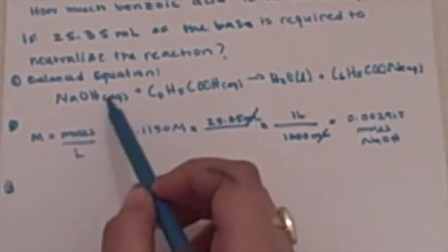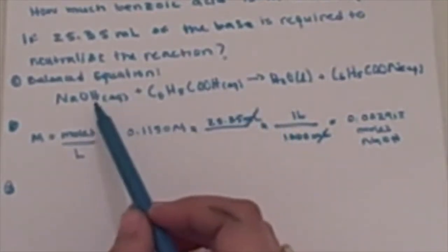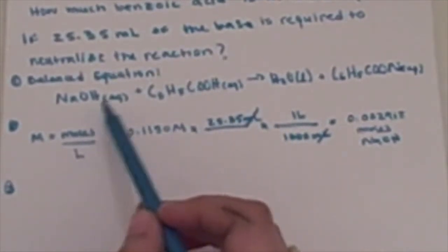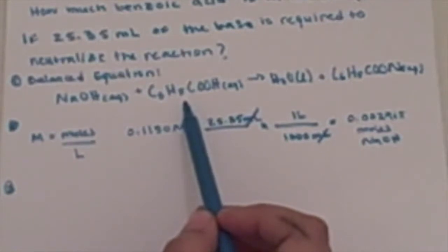The third step is to determine the moles of the benzoic acid. Here we're going to use our balanced equation to look at the mole to mole ratio. For every one mole of NaOH, we get one mole of benzoic acid.